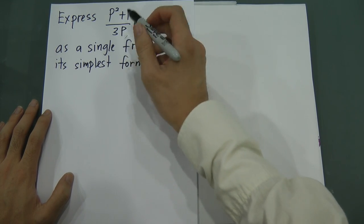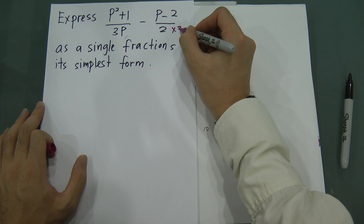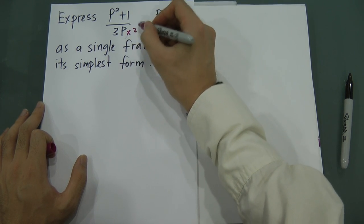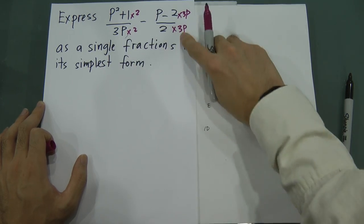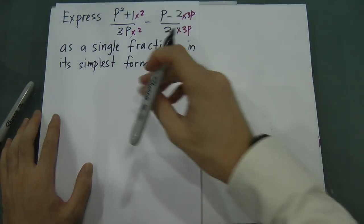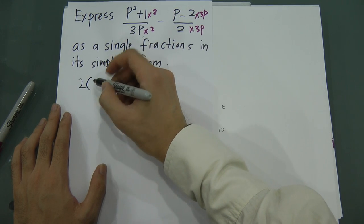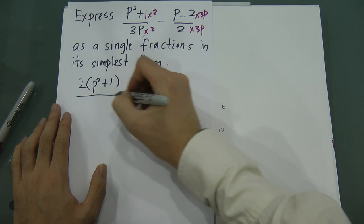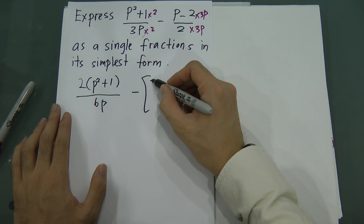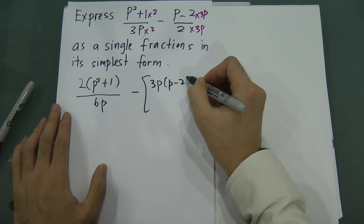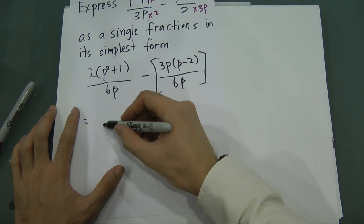First, make sure the denominators are the same. We have 3p and 2. To get a common denominator, multiply the first fraction by 2 on top and bottom, and the second fraction by 3p on top and bottom. This gives: 2(p-squared plus 1) over 6p, minus 3p(p minus 2) over 6p.